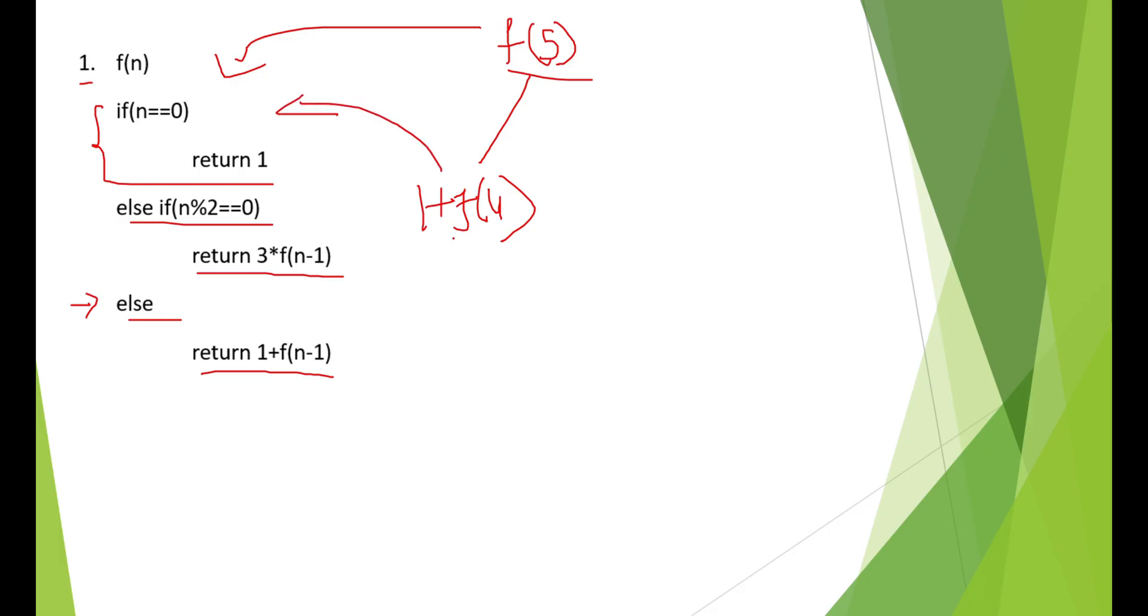We know that 4 is an even number. So this time, we will execute the else if part. We will get 3 into f of n minus 1, which is nothing but 3 into f of 3. Continuing this, we will get again, 3 is odd, so we will get 1 plus f of 2.